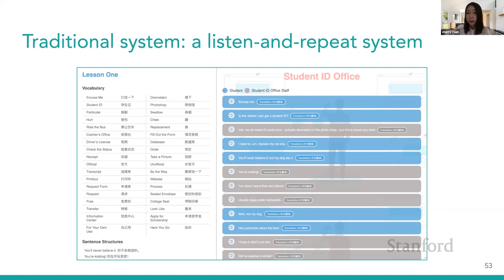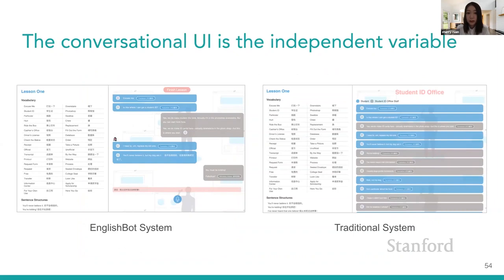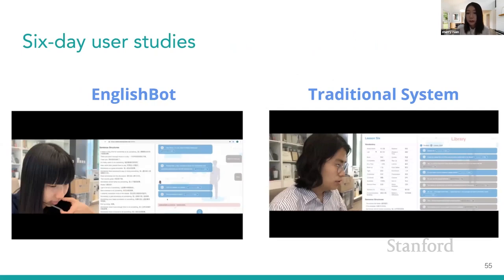However, users cannot provide any conversational inputs to the traditional system, which is the major constraint of popular English learning apps today. Hence, the only independent variable between the two systems is the conversational UI versus a traditional UI. Similar to QuizBot studies, we conducted two studies in two different learning scenarios — fixed usage and free usage. Unlike QuizBot studies, users were randomly assigned to one of the two systems and used only that system during their six-day learning period.